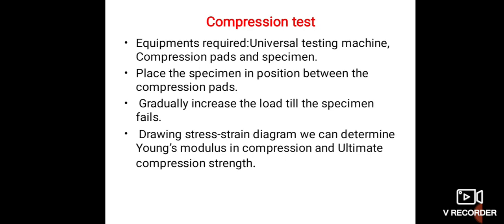Students, we can see the compression test. Equipment required for compression test is a Universal Testing Machine. The specimen is placed in position and the compression load is applied between the platens. Gradually increase the load till the specimen fails. From this we can determine Young's modulus in compression and the ultimate compression strength.